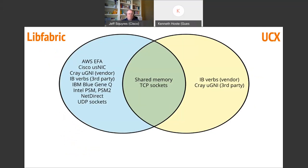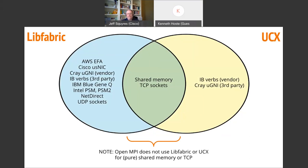While OpenMPI can use both LibFabric and UCX across a huge variety of network types, OpenMPI does not use LibFabric or UCX for pure shared memory or TCP unless you explicitly tell it to. By default, if you're doing TCP or pure shared memory, we use internal OpenMPI support for that.